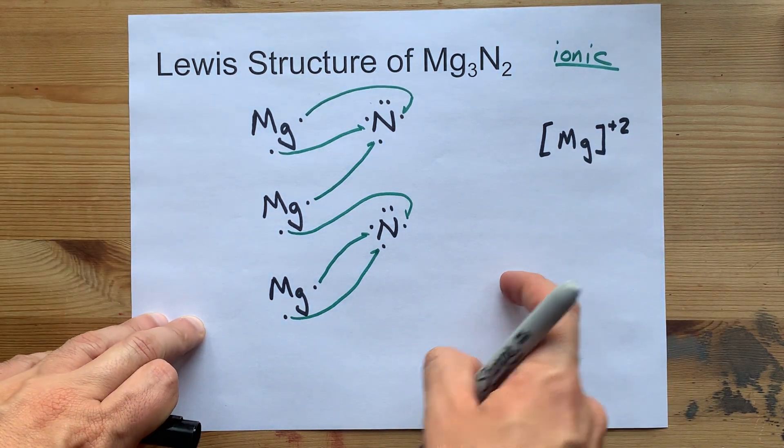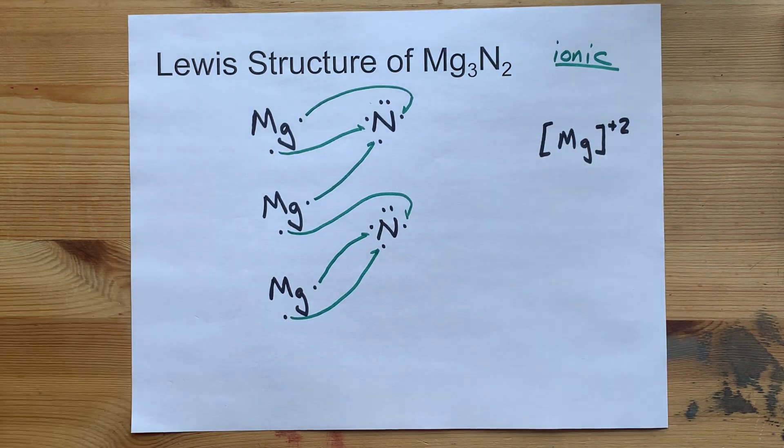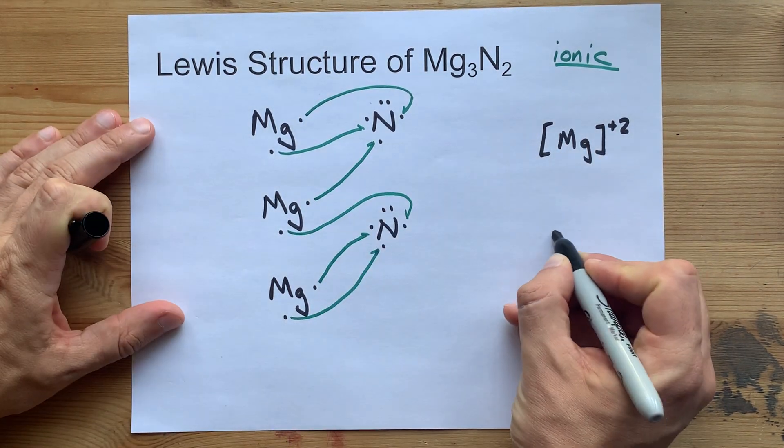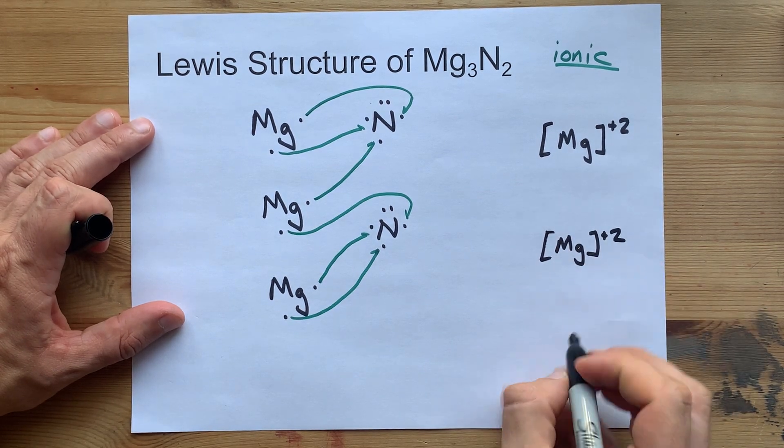Leaving it with a plus 2 charge, and charged particles in Lewis structures get square brackets around them. And that happened to 3 of them, so I need to draw that 3 times.